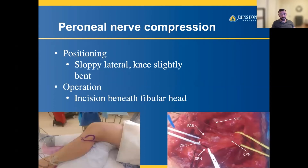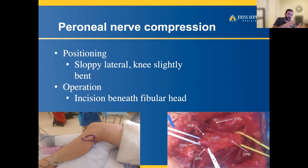For peroneal nerve decompression, the patient is placed in what's called a sloppy lateral — not fully on the side, but in a supine position with a large bump underneath to rotate them partially, allowing ease of access to the lateral knee, as shown here. The rounded part of the incision circles the fibular head, with the incision placed right under it.